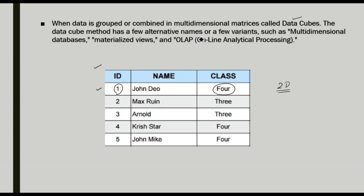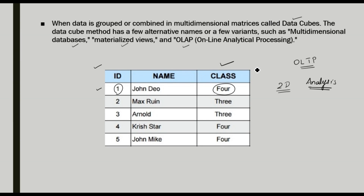The data cube has a few alternative names: we can call it a multi-dimensional database, materialized views, or OLAP — Online Analytical Processing. Normal databases are used for Online Transaction Processing (OLTP), where current transactions are handled in operational databases. But for data warehouses, we store data for analysis purposes. Data warehouse and data mining use Online Analytical Processing, and for that we prefer data cubes over regular database tables.